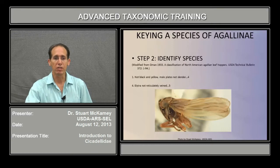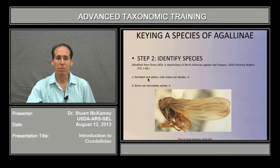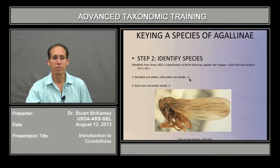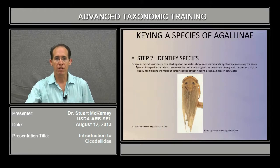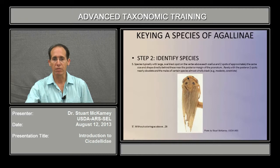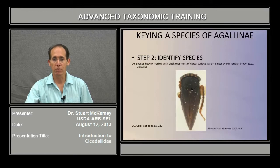Now we identify the species using a key modified from Moment 1933, the key to North American Agallia leafhoppers. First couplet: not black and yellow, male plates not slender — takes us to couplet four. Elytra not reticulately veined, just a few veins, so not reticulate — takes us to couplet five. Couplet five: with large oval black spots on the pronotum and the head, or not as above — and that takes us to couplet 26. Basically black or almost so, or not — as in our species — which takes us to couplet 36.